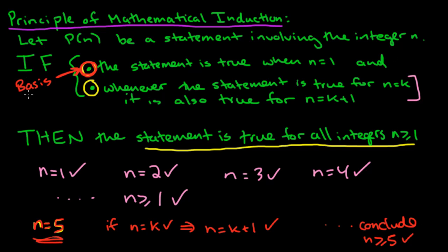The place where you start is called your basis — you have to check that it holds for the first place. And then the next part, showing that if it's true for n equals k then it must be true for n equals k plus 1, is called the induction step. So there are two main parts to this principle: the basis and the induction step.